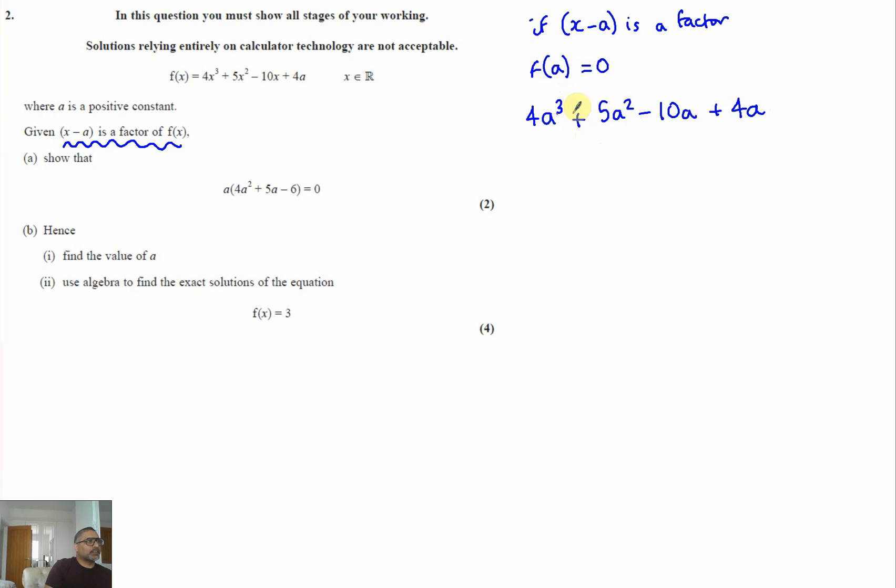Okay, and you can see that we can factorize a out. So if we factorize that out, we get 4a squared plus 5a minus 10 plus 4. And that simplifies down to a bracket 4a squared plus 5a. Then minus 10 plus 4 gives us minus 6.